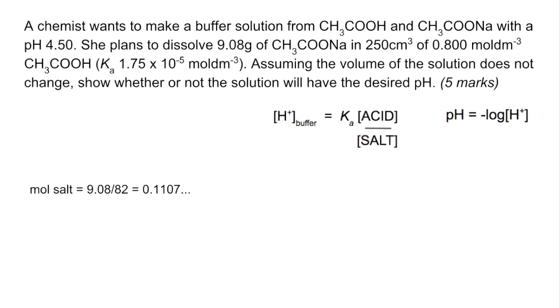We need to turn that into a concentration. So to do that, we divide those moles by the volume. Remember the volume was 250 cm³, so that's 0.25 of a dm³. So we've now got the concentration of the salt at 0.443 moles per dm³.